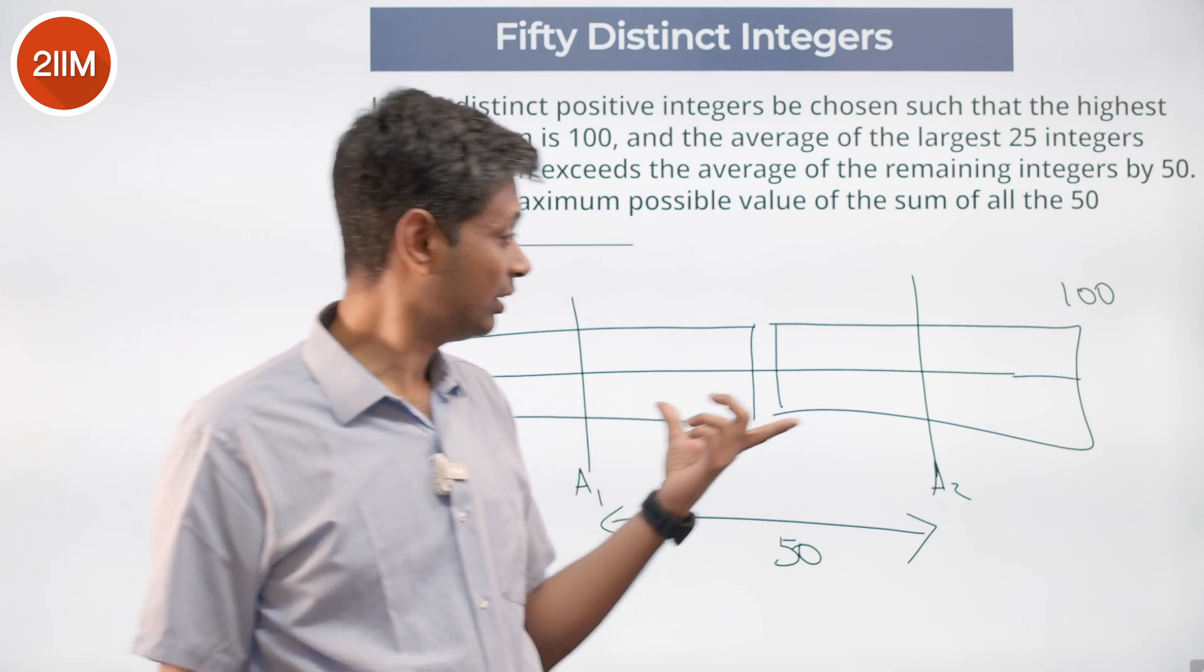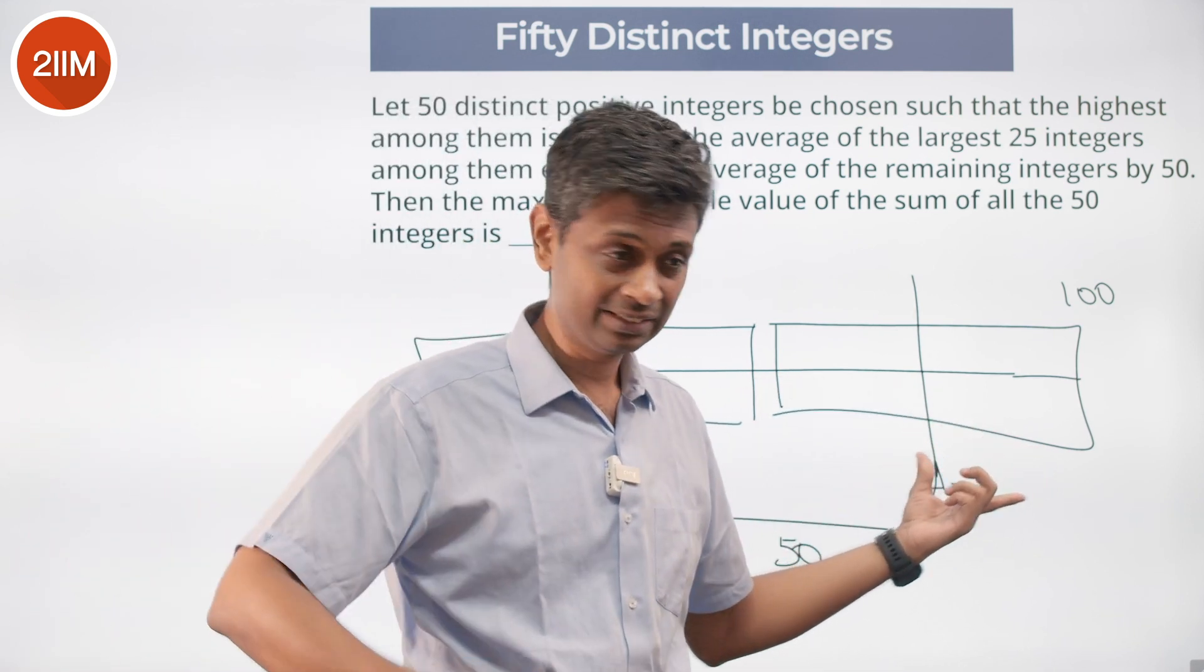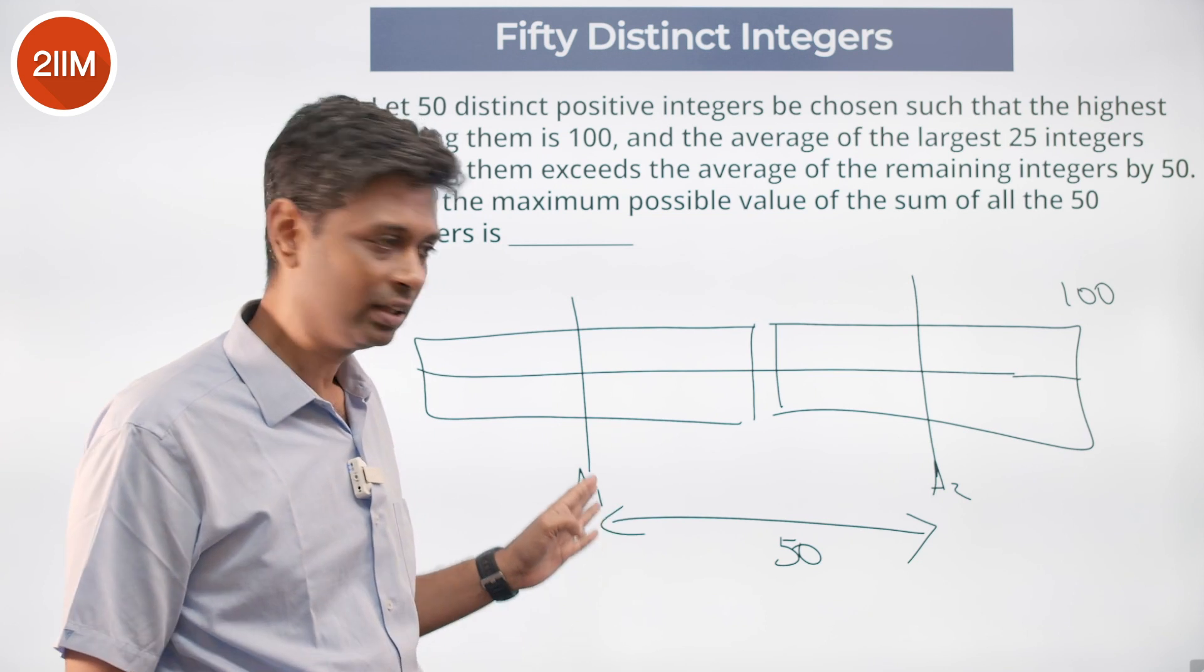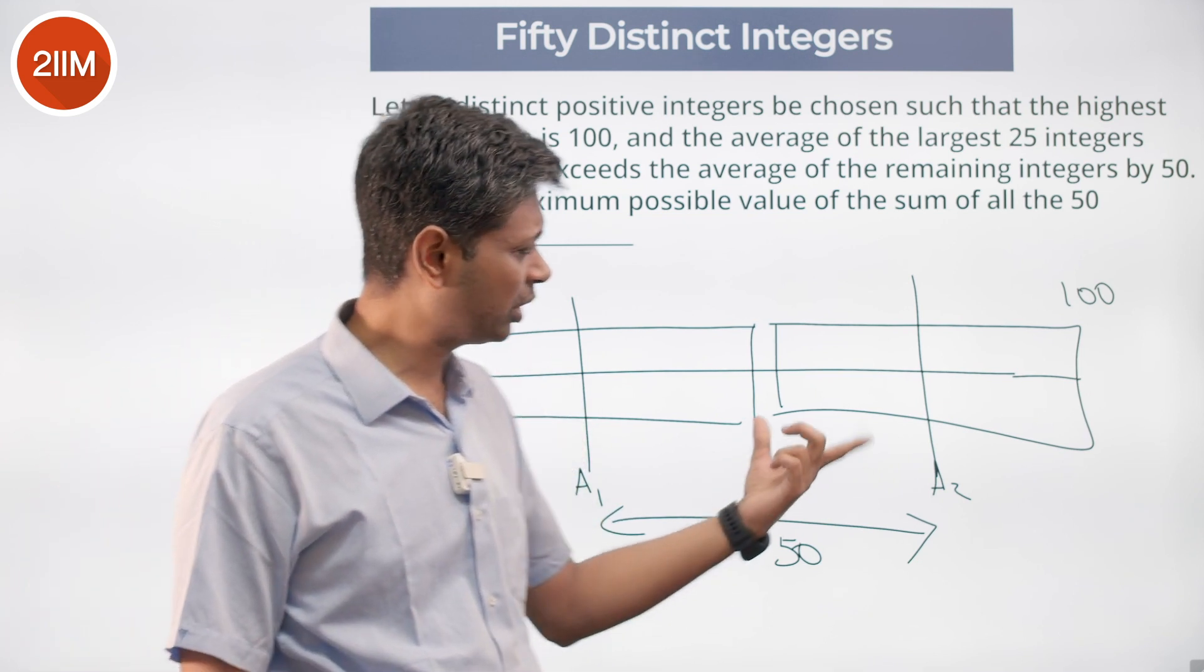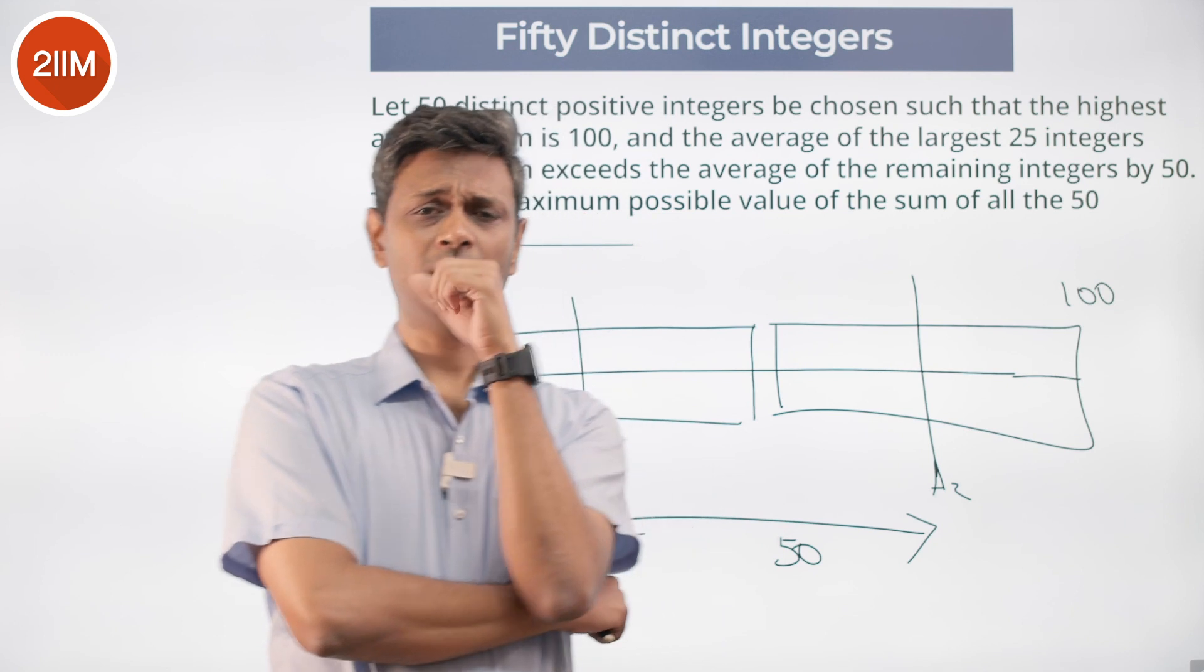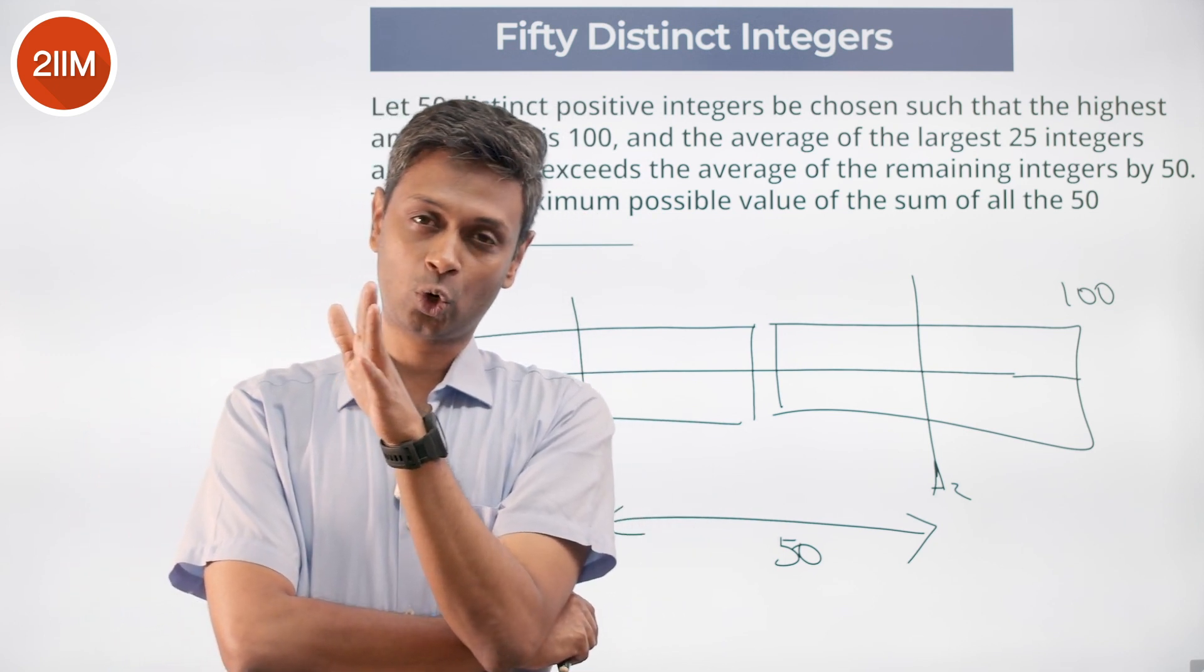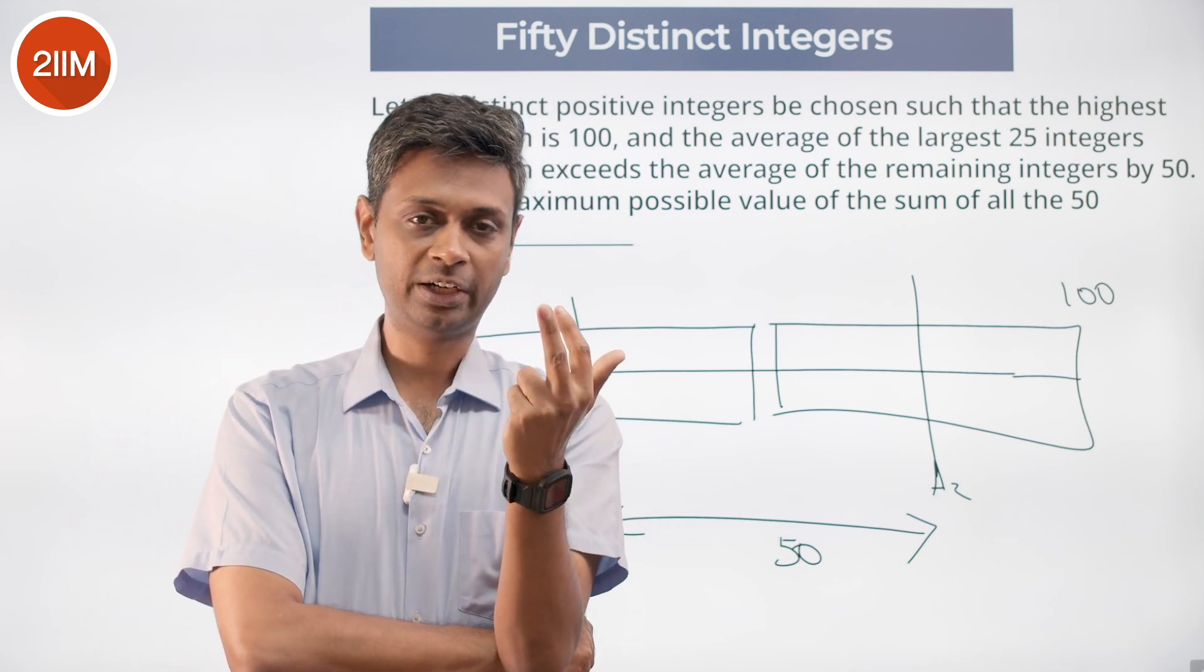Forget about this 25. This 25 are high, the average is 50, this will also be as high as possible. What is the scenario for this 25 being high? I have numbers that are close to each other starting from 100, 99, 98.